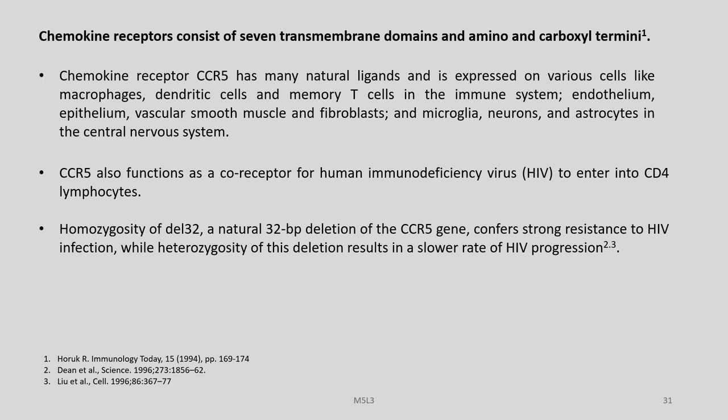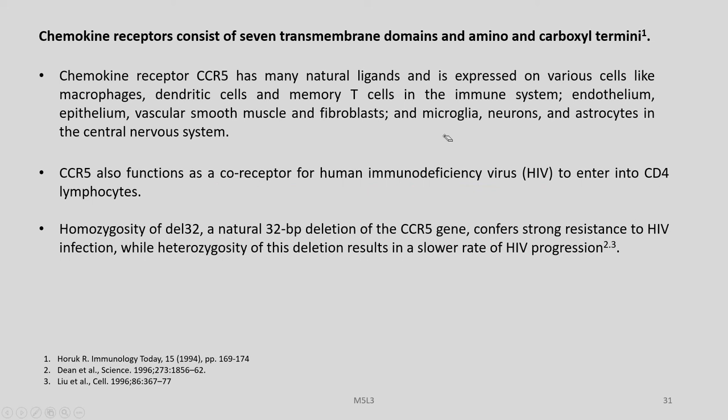The chemokine receptor CCR5 has many natural ligands and is expressed in various cells like macrophages, dendritic cells and memory T cells in the immune system, endothelium, epithelium, vascular smooth muscle and fibroblasts, as well as microglia, neurons and astrocytes in the central nervous system. CCR5 also functions as a co-receptor for human immunodeficiency virus to enter into CD4 lymphocytes.